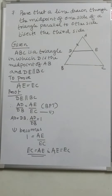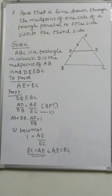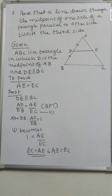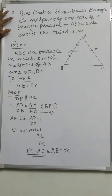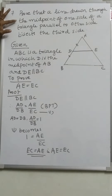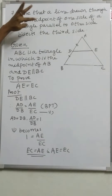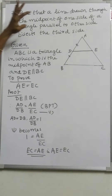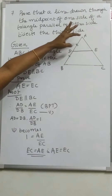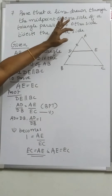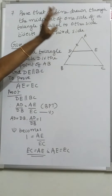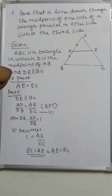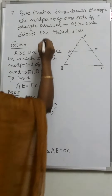Sixth question is a practice problem for you. Then, question number 7: prove that a line drawn through the midpoint of one side of a triangle, parallel to the other side, bisects the third side. This is the midpoint theorem.